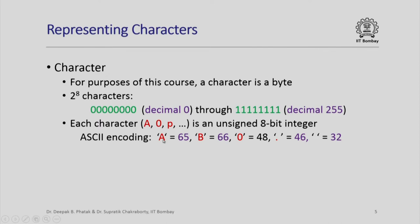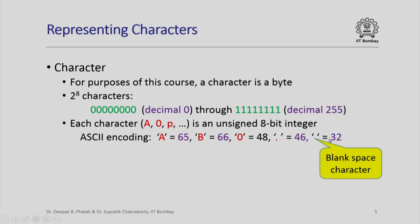For example, uppercase A is denoted by the unsigned 8-bit integer 65 in decimal, uppercase B is 66 in decimal. The character '0' is represented by the decimal number 48 — note that the character '0' is not represented by the decimal number 0. The character dot is encoded as 46, and the blank space character is encoded by the decimal 8-bit integer 32.